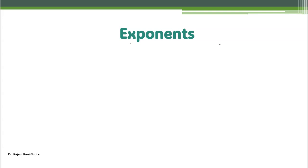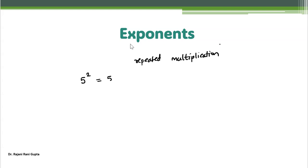Exponent is nothing but a way to express repeated multiplication. So what do we mean by that? If I say 5 power 2, it means the number 5 is multiplied 2 times. So 5 multiply 5, and 5 multiply 5 is 25.